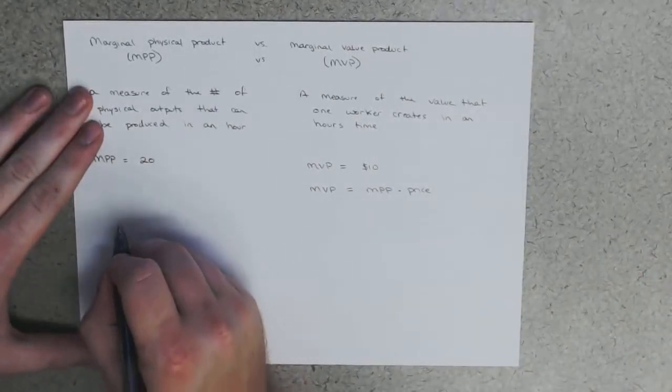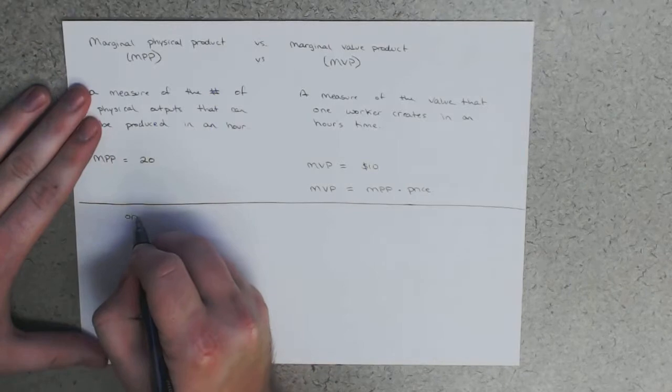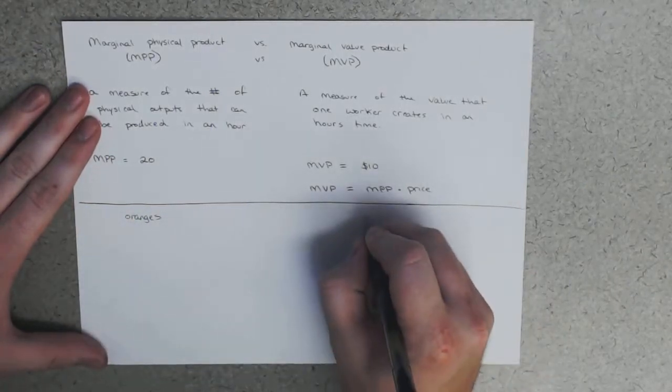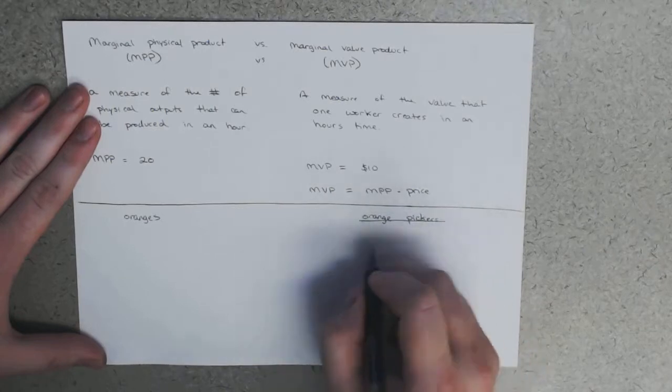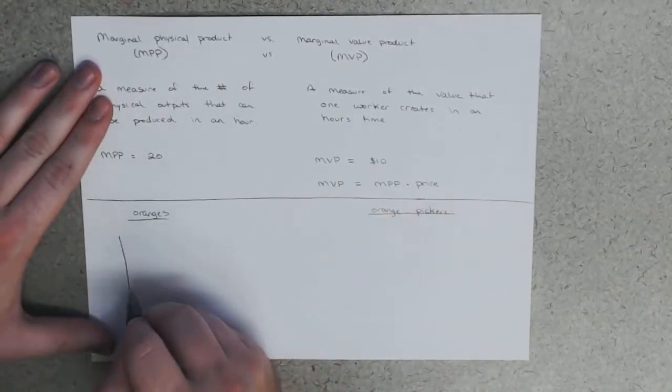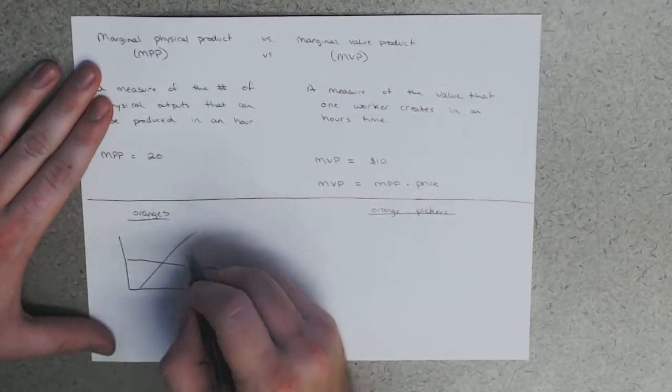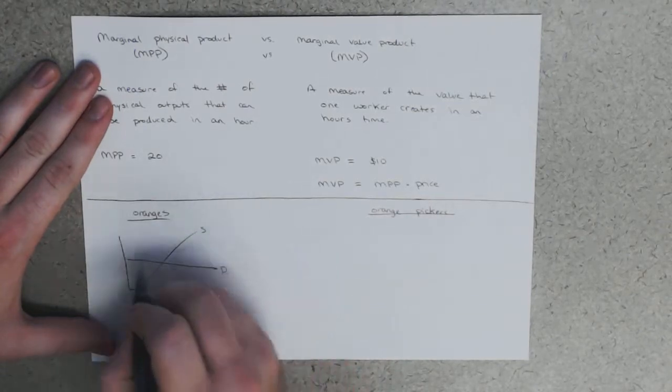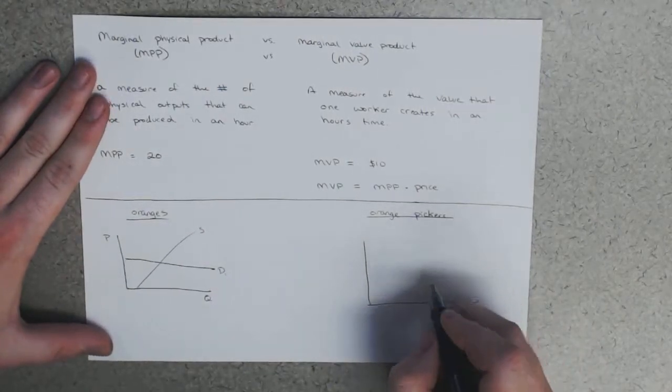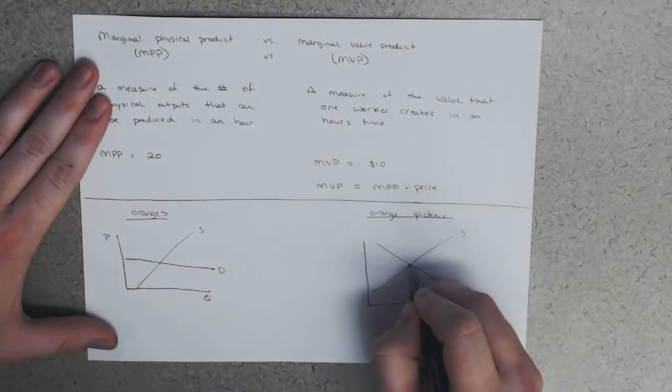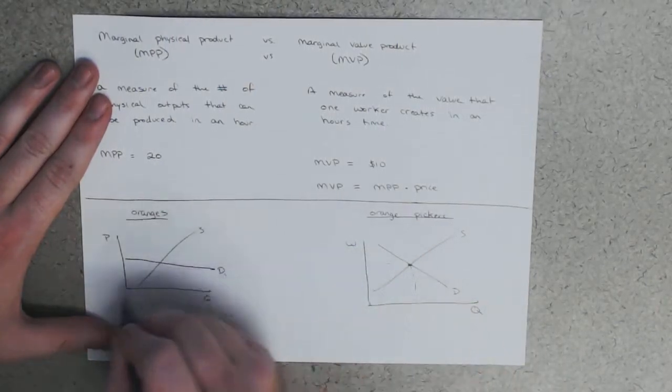So let's say we have an orange market and we have orange pickers. Let's start off and say we have a very elastic demand curve, we have our supply curve, price, and we have orange pickers. That's a normal market: wage and quantity.